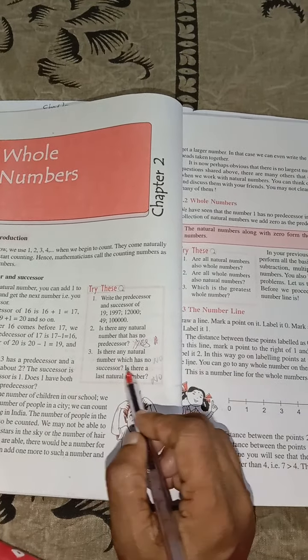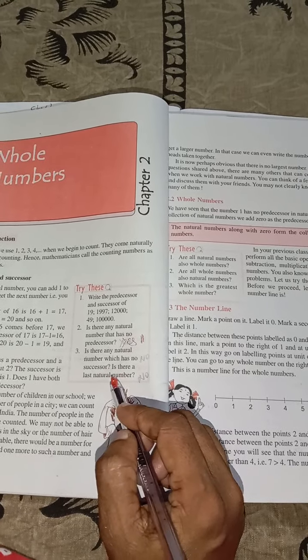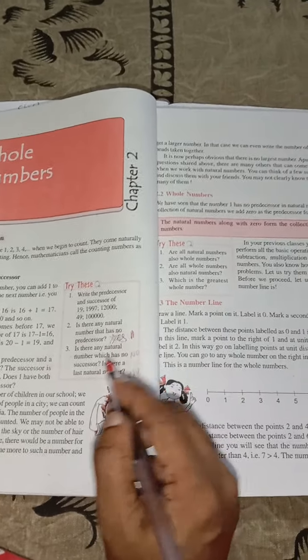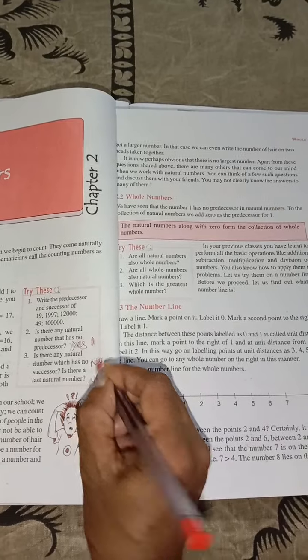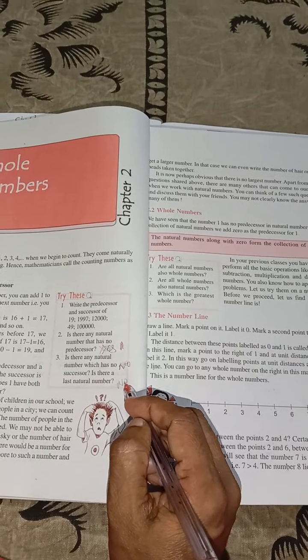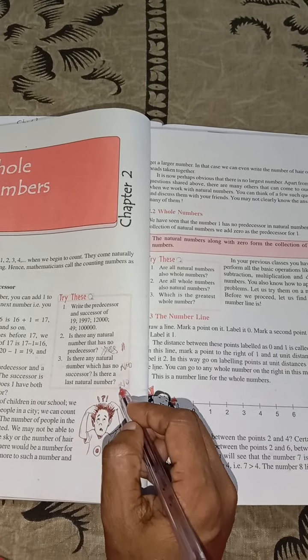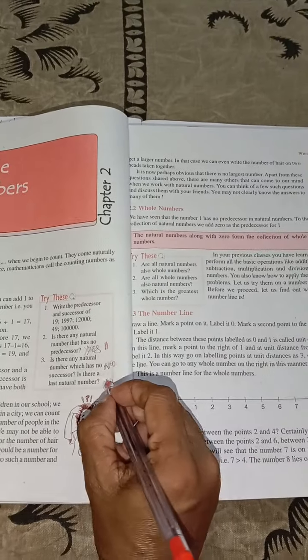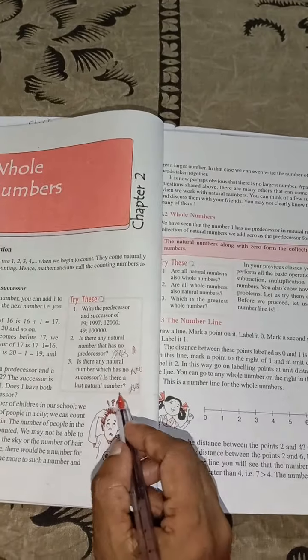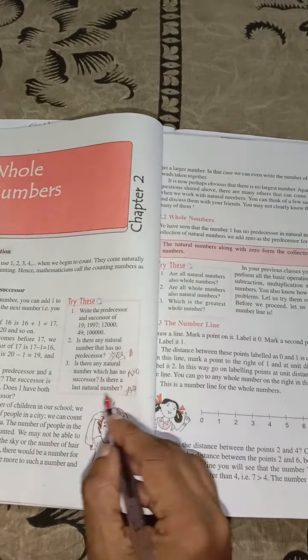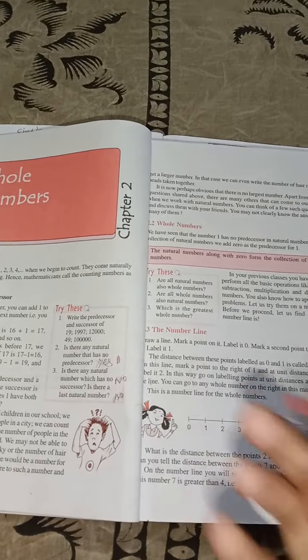And 3rd one, is there any natural number that has no successor? No. Because every natural number we have successor. Is there a last natural number? No. Because natural numbers are endless. So we can't define which is the last number. So the answer is no.